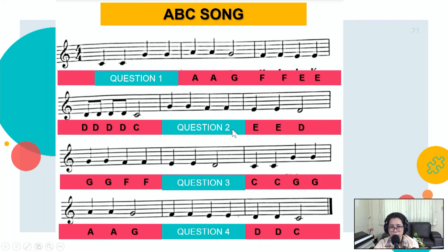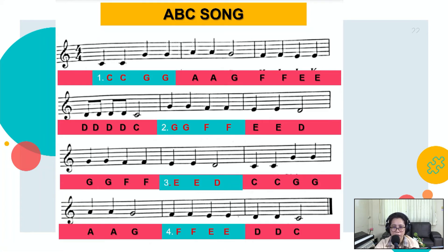Next. Question number two. Five seconds to say the letter names of the notations. One, two, three, four, five. Answer. The answer is G G F F — Sol Sol Fa Fa. If you answered that one, then well and good. Very good.